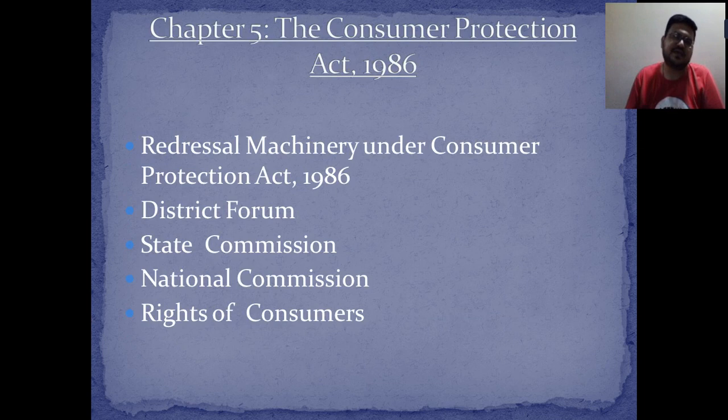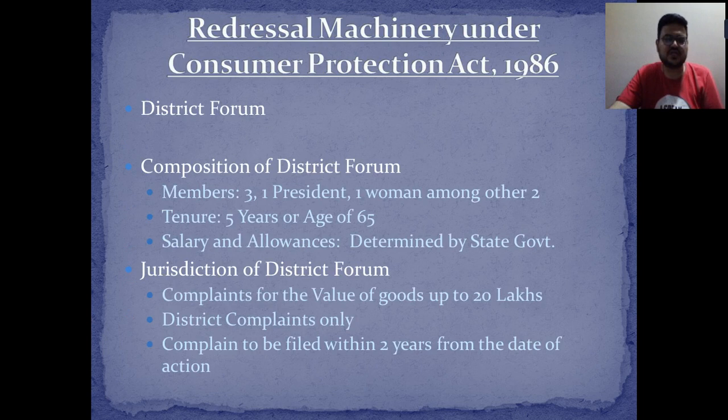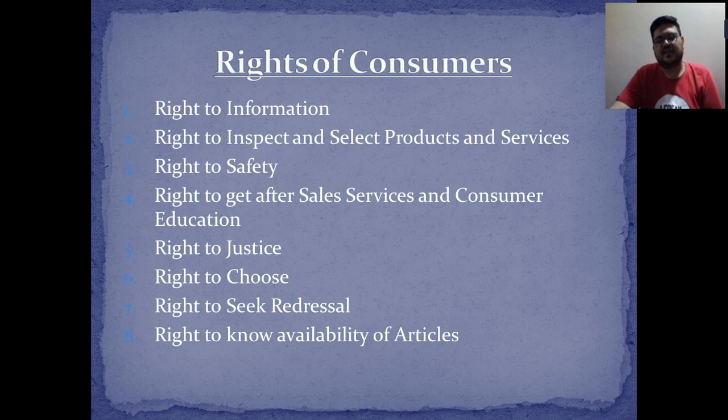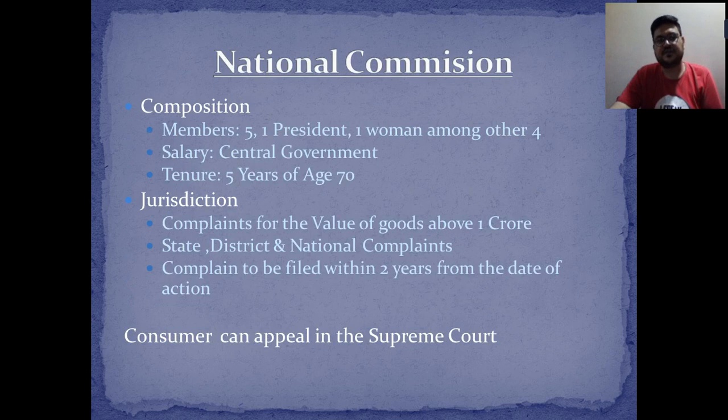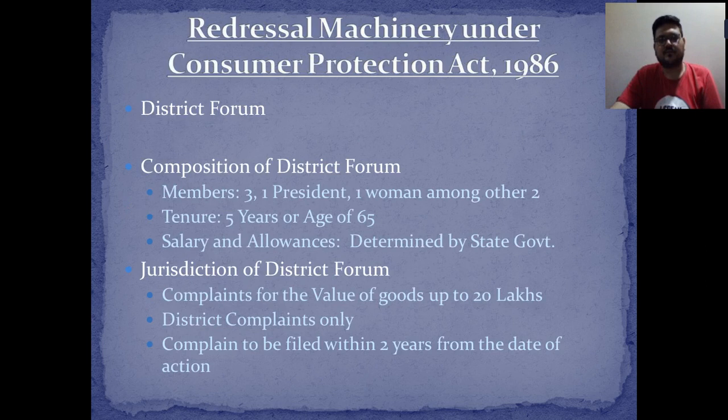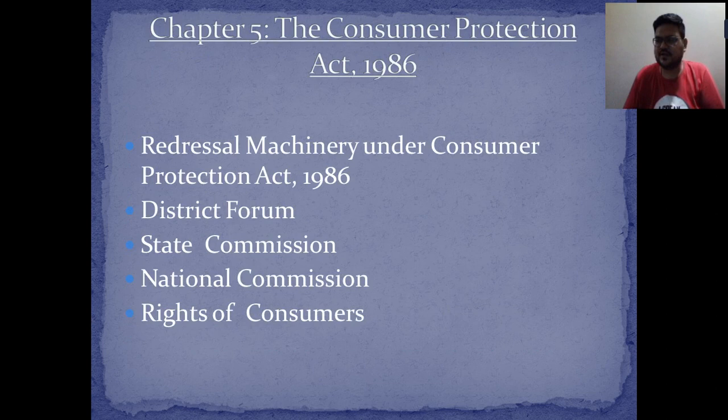We now go to Chapter 5 — the Consumer Protection Act 1986. We'll be looking at the redressal machinery under this act: what comes under redressal machinery, what is the district forum, what is the state commission, what is the national commission, and the rights of consumers. It's a short chapter — we'll quickly run through the important details in a step-by-step manner.